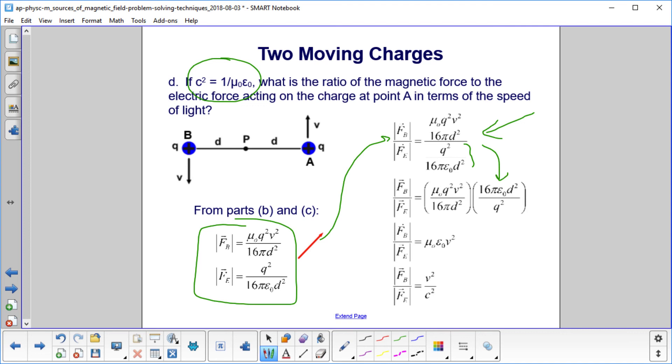That's what we did there, and a lot of stuff cancels out. Then you make the substitution, C squared is one over mu zero epsilon zero, and here's our answer.